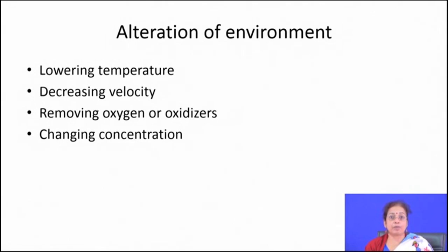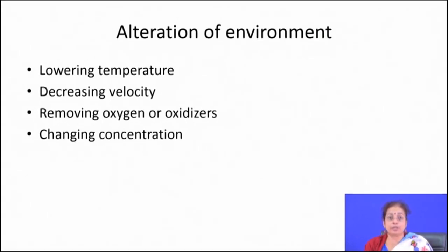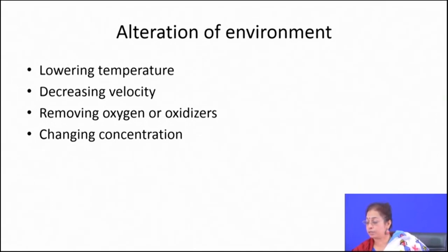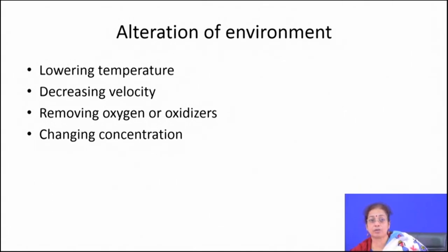You can also change the environment. Changing the environment can be done by reducing external parameters that aggravate the corrosion rate — like velocity, which aggravates corrosion. Decreasing velocity reduces corrosion rate; reducing temperature also reduces corrosion rate because corrosion is a thermally activated process. You can also remove oxygen or oxidizer, and change the concentration — by all these ways you can alter the environment.